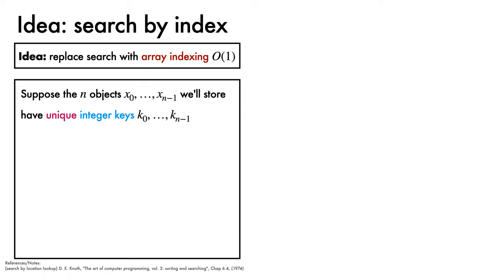Suppose we wish to store n objects, labelled x0 up to xn-1, that have corresponding unique integer keys, k0 up to kn-1. We'll assume that all keys fall within a set of integers ranging from 0 up to m-1. We'll use the grandiose term universe, denoted by U, to denote this space of all possible keys. So in this example, U is equal to the integers between 0 and m-1.